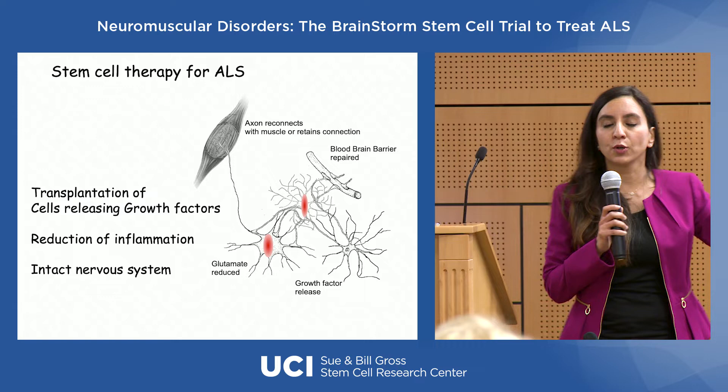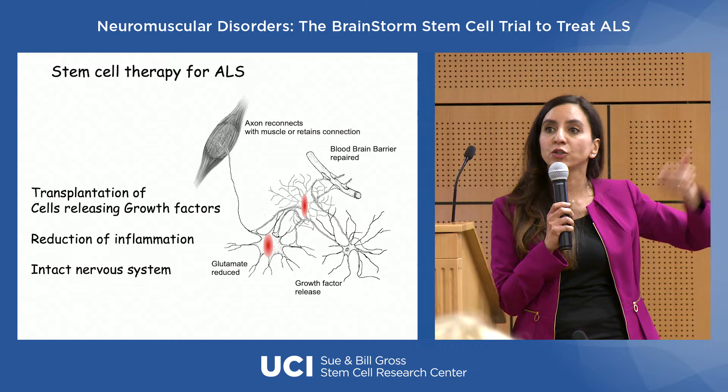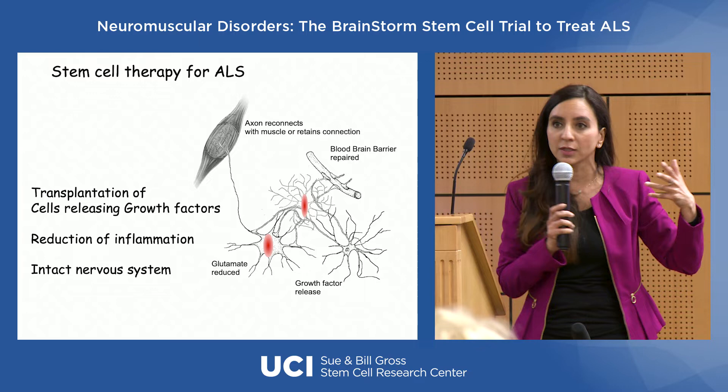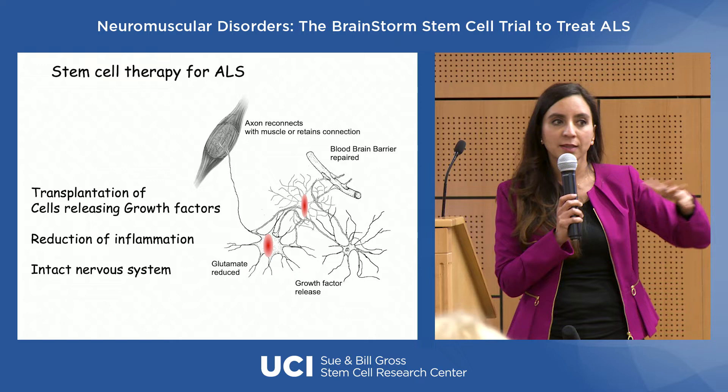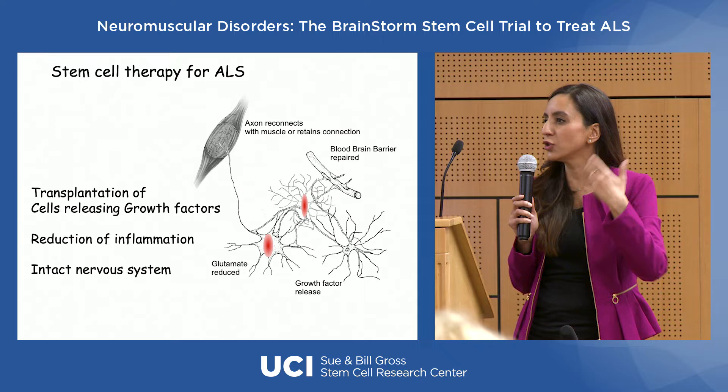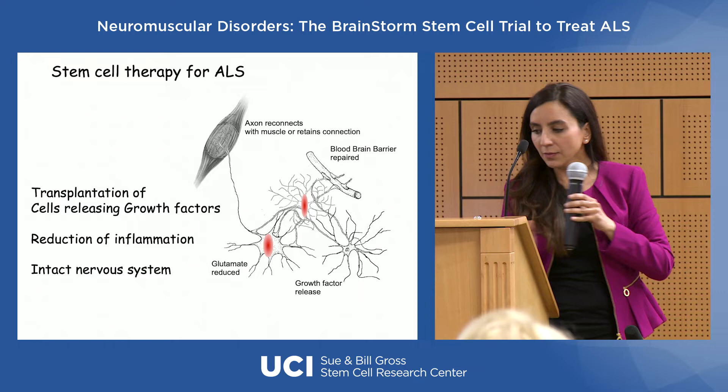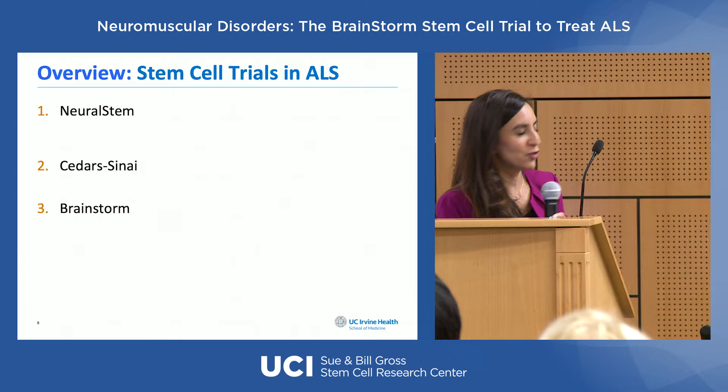With stem cell therapy, we're using stem cells as a vector to release growth factors back into the spinal fluid to reduce inflammation, support the glial cells again, promote a healthier environment, and promote an intact nervous system so that the nerves can regenerate and vascular supply can keep the environment healthy. That's the basic concept of stem cell therapy for ALS.